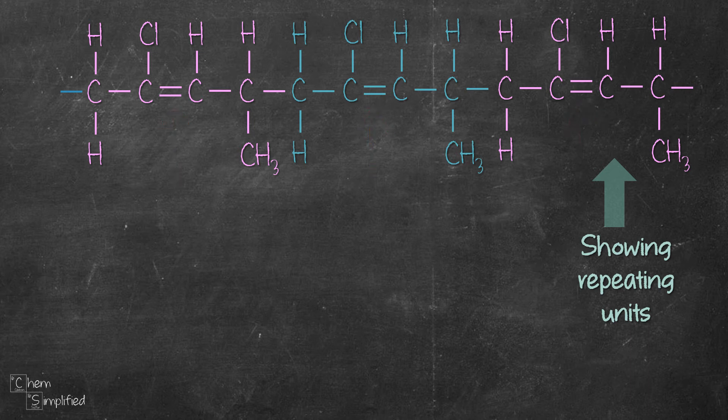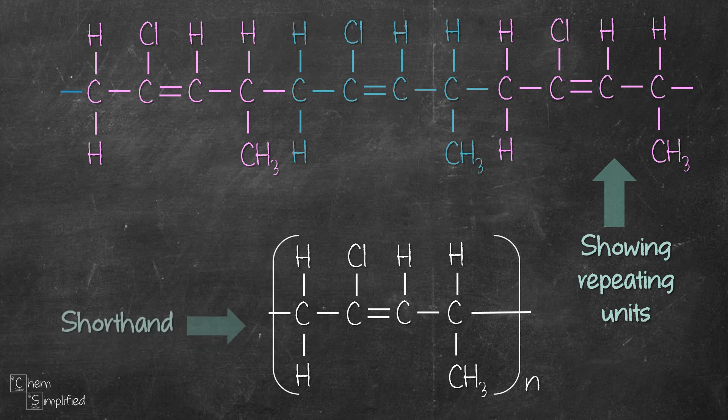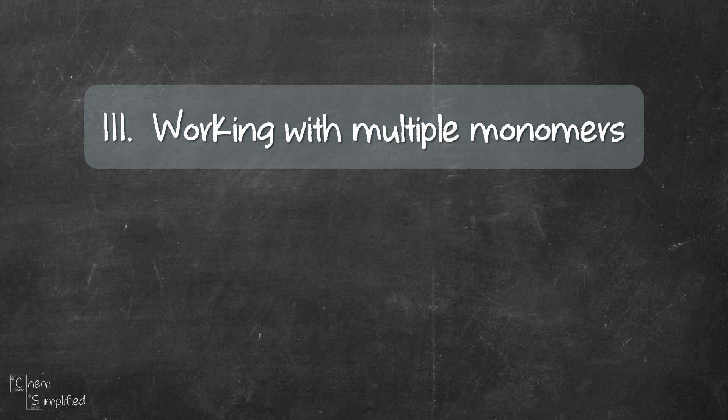For the shorthand structure, all we have to do is draw out the repeating unit with open-ended bonds, place the bracket over it and N at the bottom right, and we're done. Now that we know how to draw a polymer from the two types of monomer, we can essentially mix and match them up. That will give us copolymers.